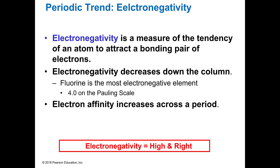The last trend I'm going to talk about is electronegativity. Technically it isn't discussed until some of the chapters ahead of us, but I want to point it out because electronegativity is one of the E's — it's high and right. Of all the periodic trends we've looked at, electronegativity is the one you're going to use the most. It's a measure of the tendency of an atom to attract a bonding pair of electrons — basically, how likely it is to pull electrons into a bond.